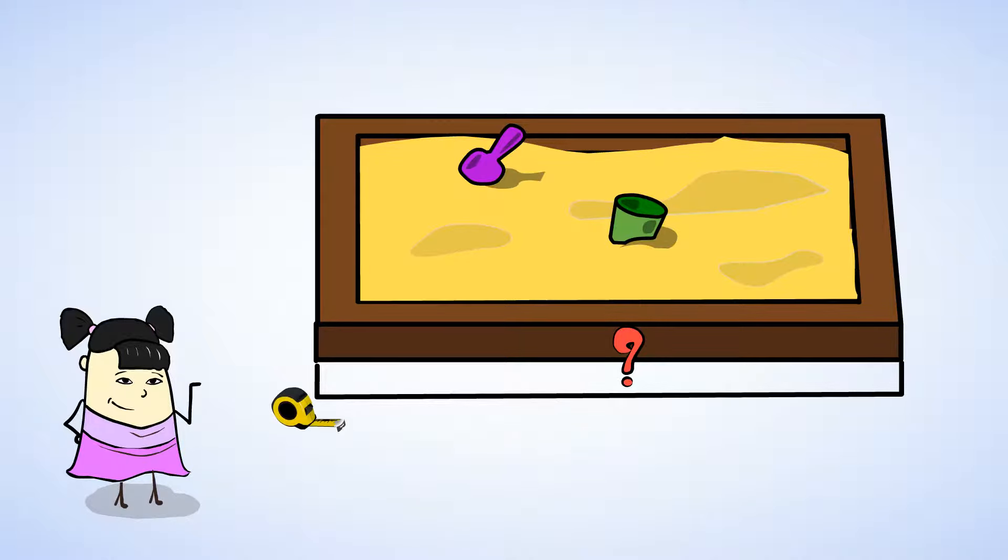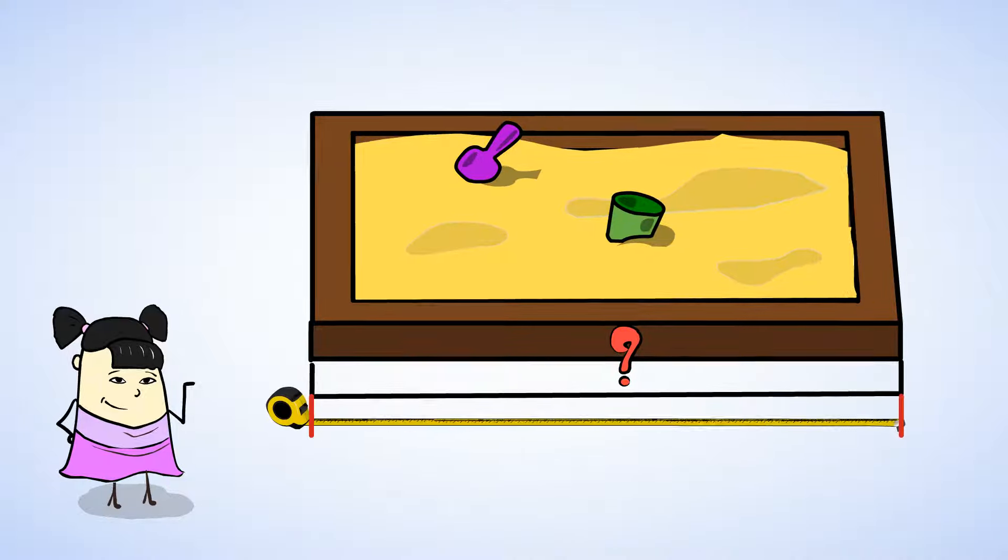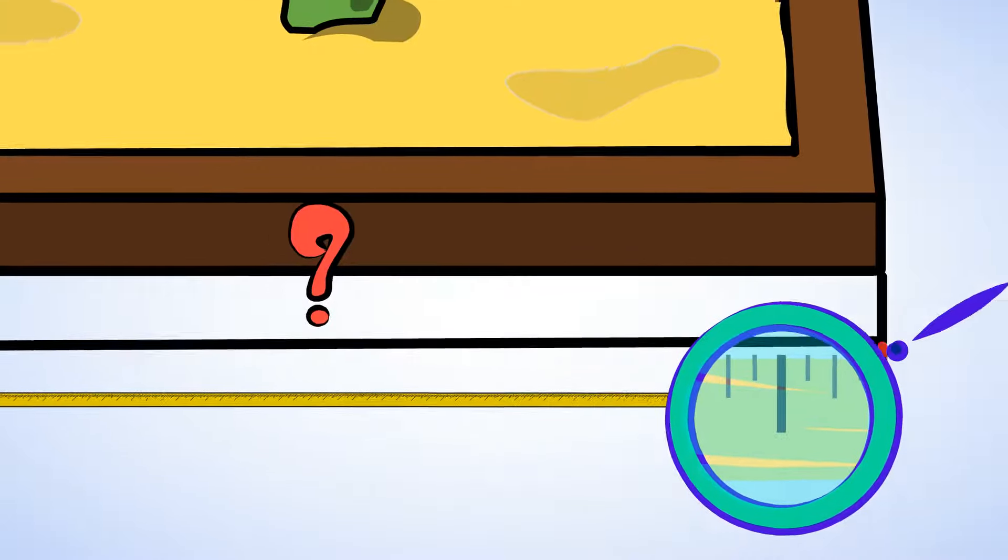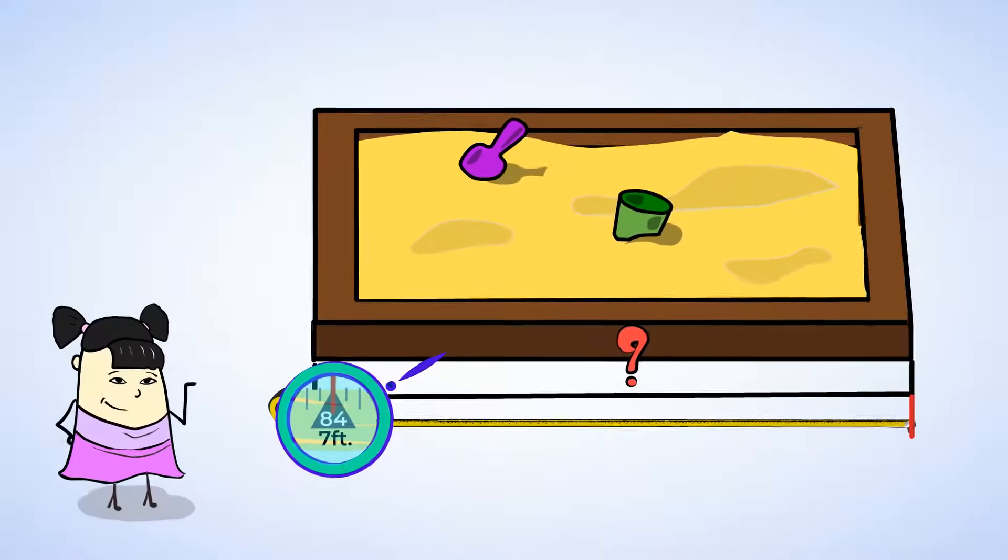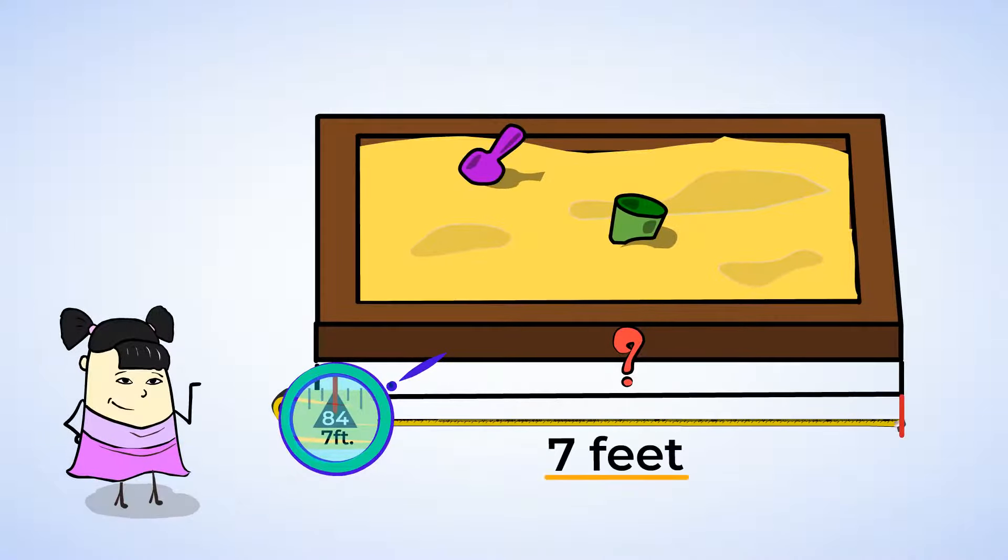Okay, great. So now we've aligned the measuring tape with one side of the sandbox and pulled it all the way out past the other side. And now we can see that the sandbox is seven feet long. Great measuring.